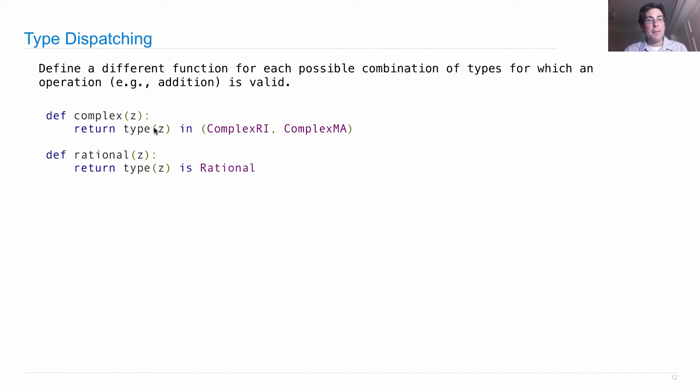And here, we're just comparing the type of z to various classes. There are two kinds of complex numbers, one type of rational number.